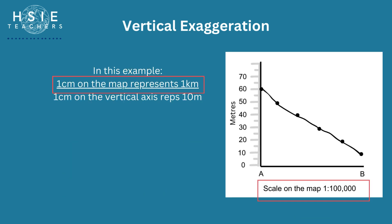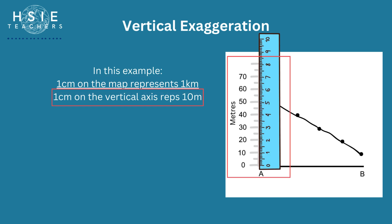In this example, for the horizontal scale, one centimeter on the map represents one kilometer. This is because the map has a scale of 1:100,000. For the vertical scale, one centimeter on the vertical scale represents 10 meters. We can see this by using our ruler next to the vertical scale.